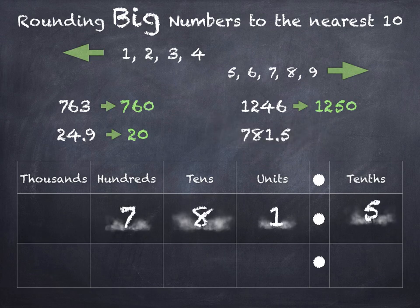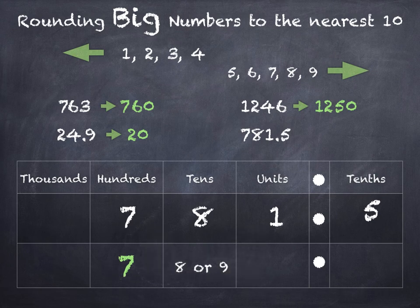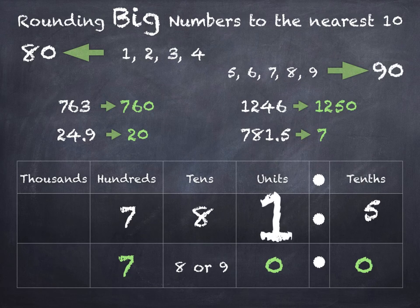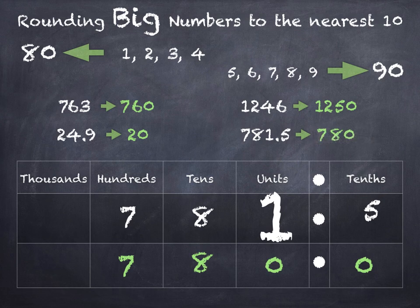781.5. The hundreds will stay the same. The tens will be 8 or 9, the units will be 0 and the tenths will be 0. So we'll either be rounding down to 80 or up to 90 for the tens. The units digit is 1 so that tells us we'll be rounding down to 80. 781.5 rounds to 780.